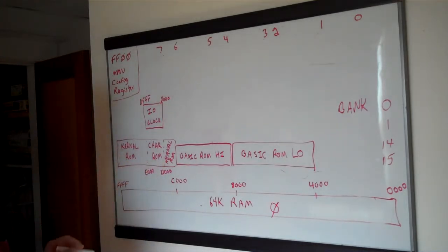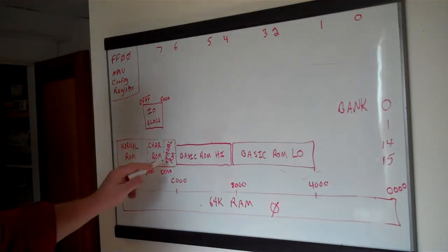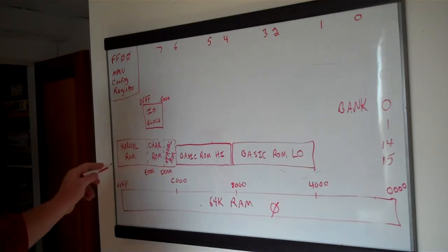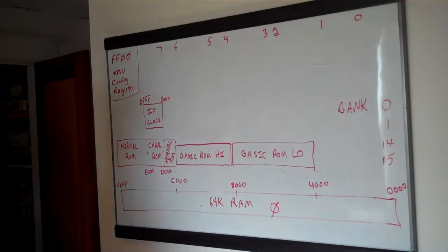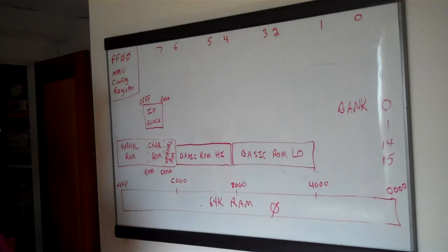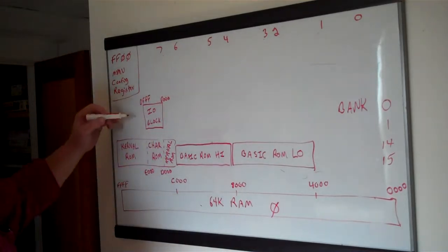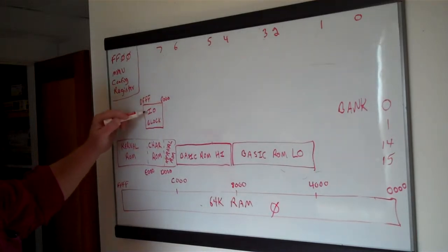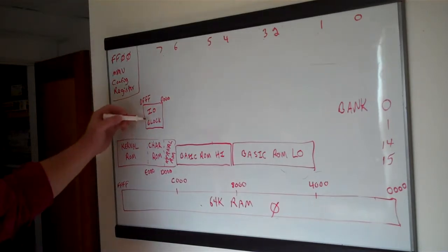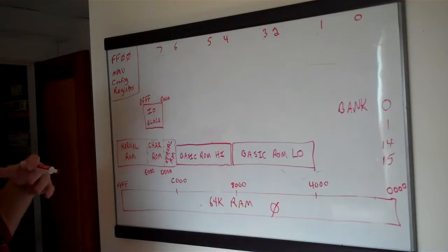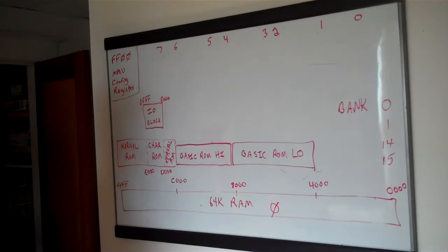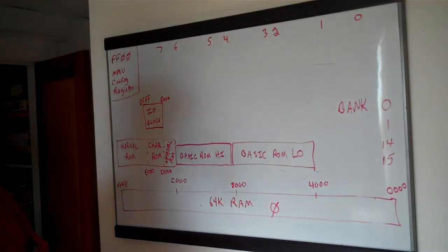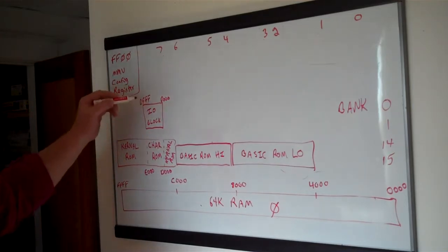On either side of Character ROM is Kernel ROM — from C000 to D000, and then from E000 up to the top. The kernel routines handle things like talking to the drives, checking the keyboard, sending data to the screen, and all that kind of I/O. That's the ROM layer sitting on top of RAM. Then above that you have the I/O block from D000 to DFFF, which is an assortment of all the registers that run your different I/O chips — sound chip, video chips, joysticks, keyboard, modem, and so on.